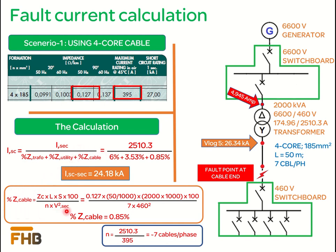In the formula, Z-C is the cable impedance and its value is from the cable datasheet, which is 0.127 ohms per kilometer. This is the corresponding value at 50 Hz frequency and 90 degrees cable end temperature.